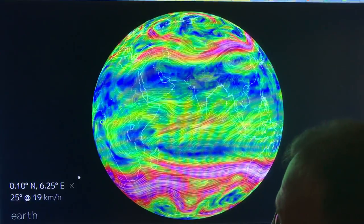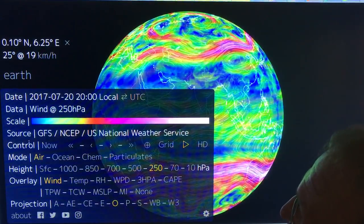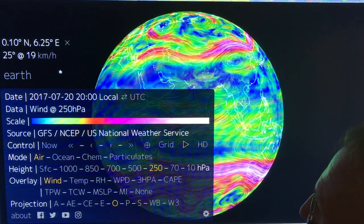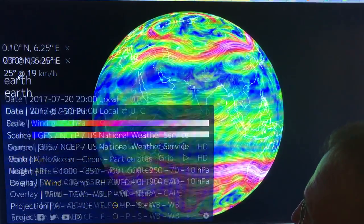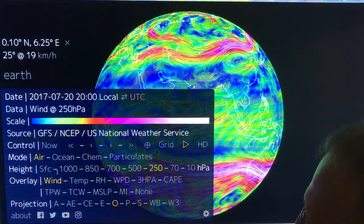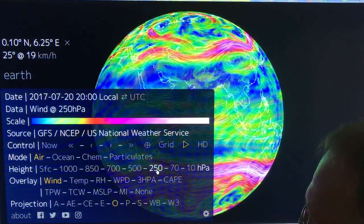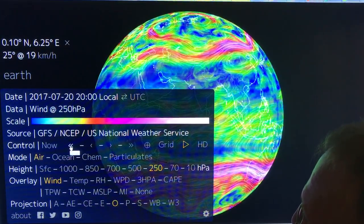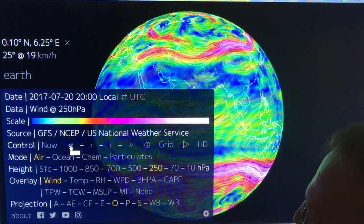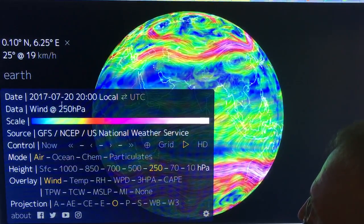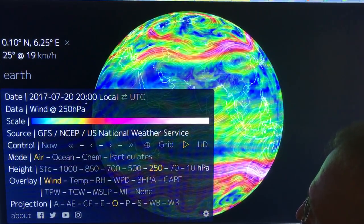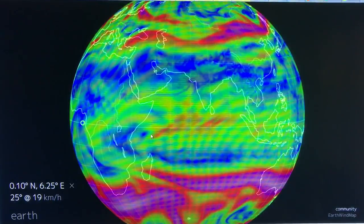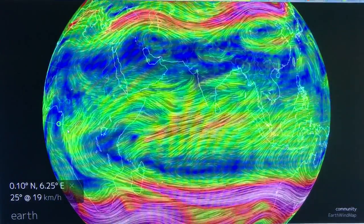So if you Google Earth Null School, N-U-L-L School, you get this and click on Earth in the bottom left corner and bring up the menu, look at height 250 millibar, you're looking at winds, and then you can cycle back with the double arrow to July 20th, 2017, and it's 200 local time.